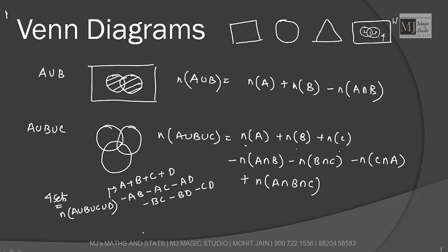Now adding, taking three at a time: plus ABC plus BCD plus CDA plus BAD. And after that we will deduct taking all at a time: minus ABCD. This becomes the formula for four sets.